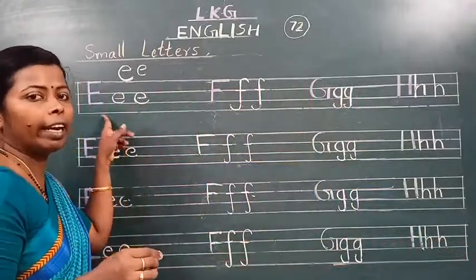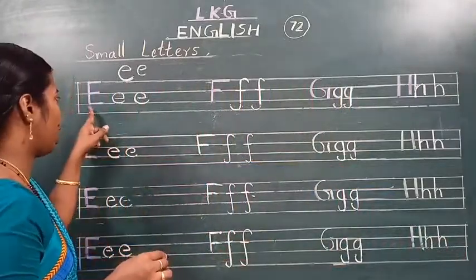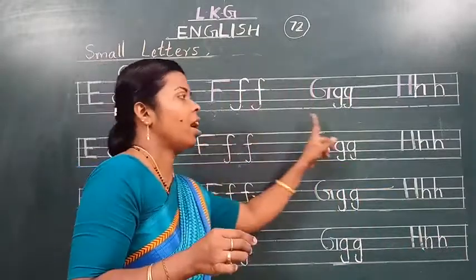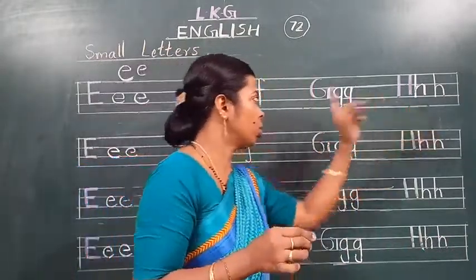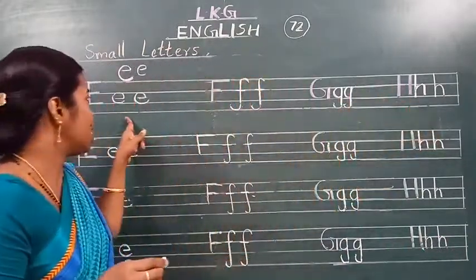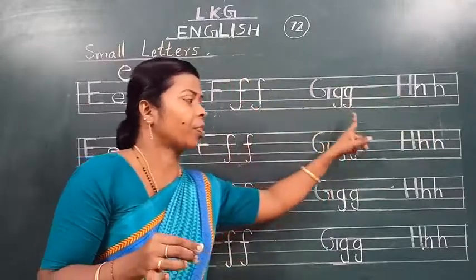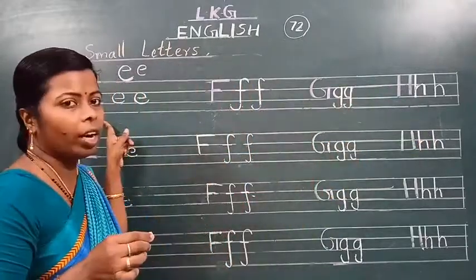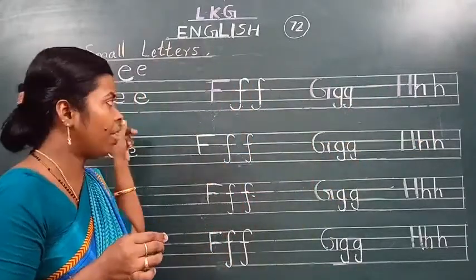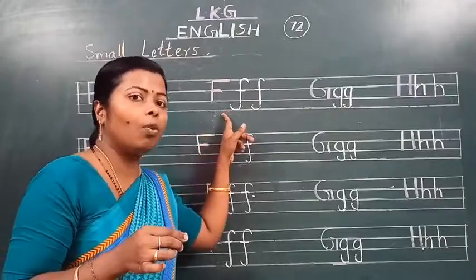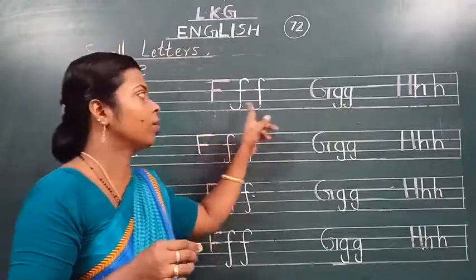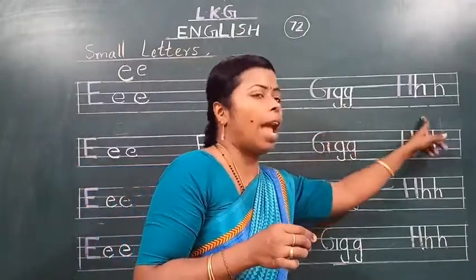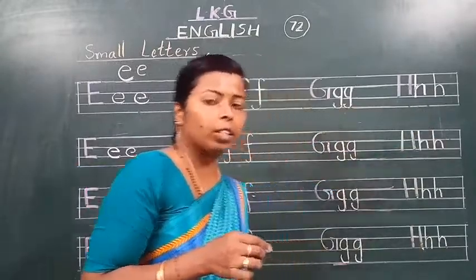Now we will read one time. Okay: E, F, G, H. Okay: E, F, G, H. E for elephant. F for frog. G for grapes. H for hat.